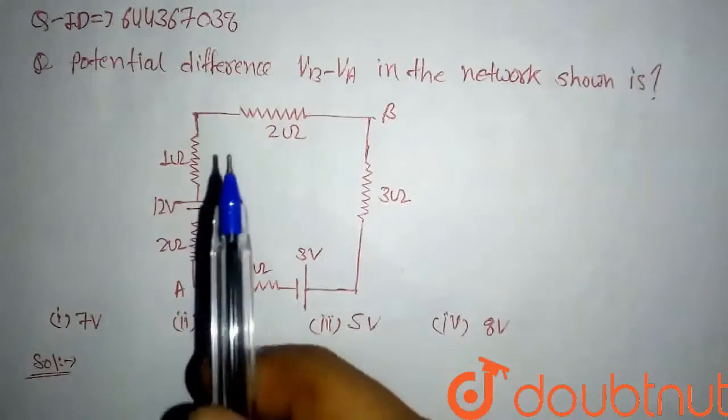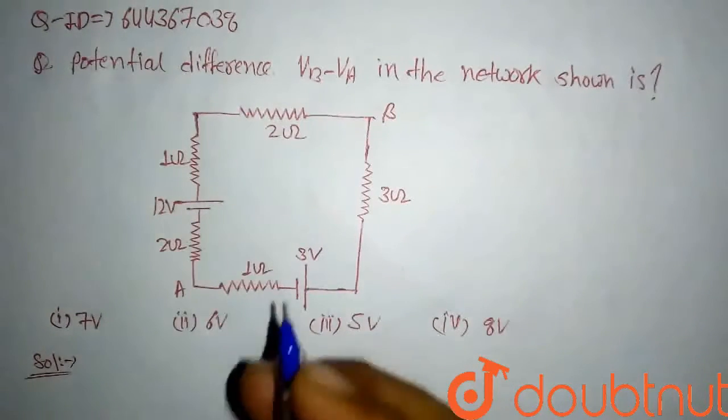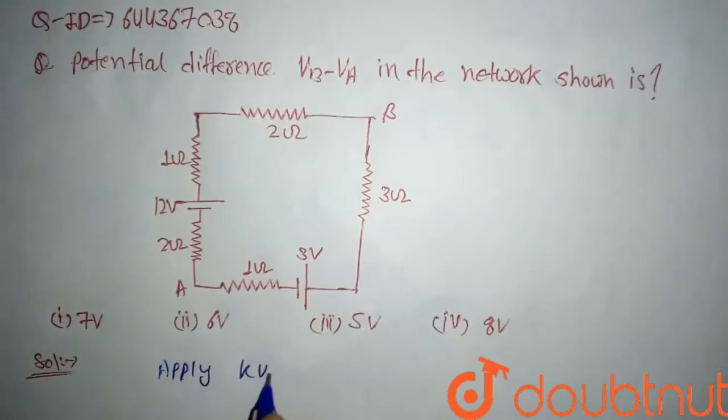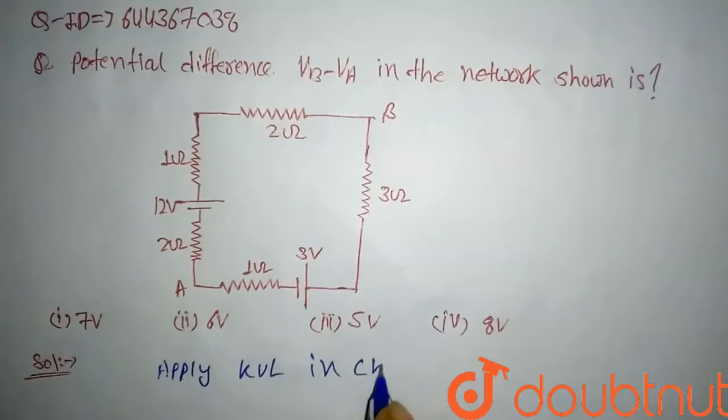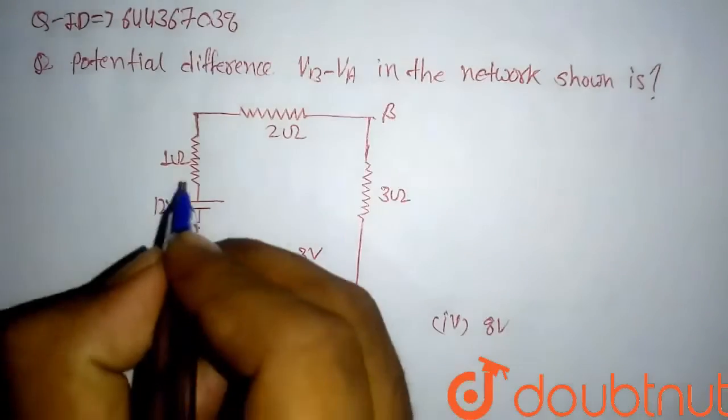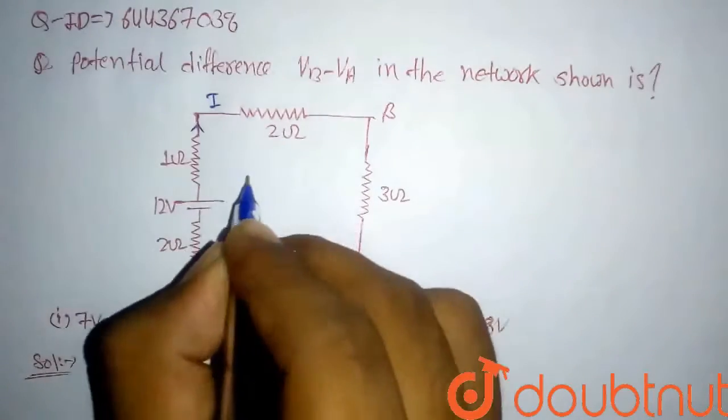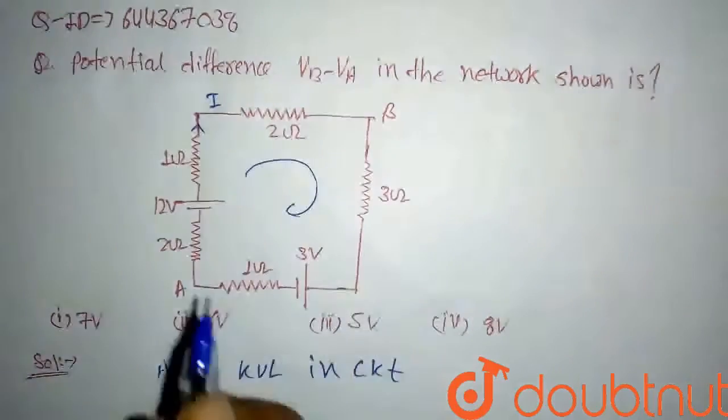So first we will find current in this circuit. We will apply KVL. So apply KVL in circuit. Assume that the current flowing through this circuit is I in clockwise direction. I will start from 12.